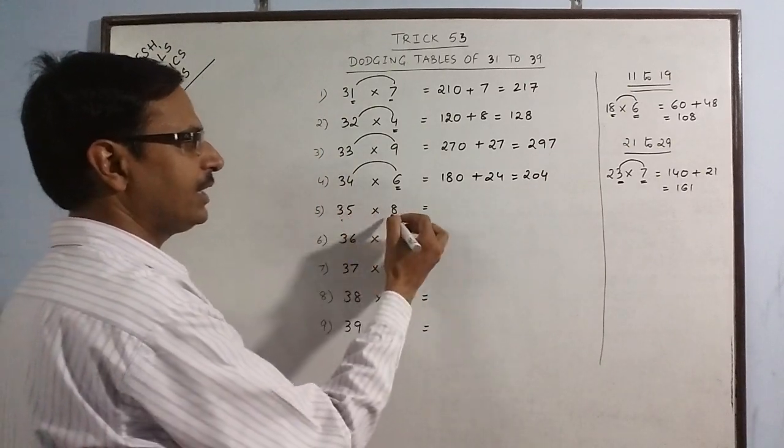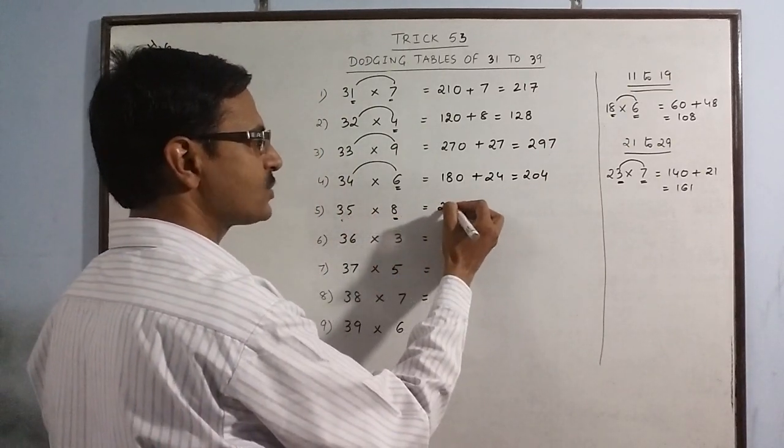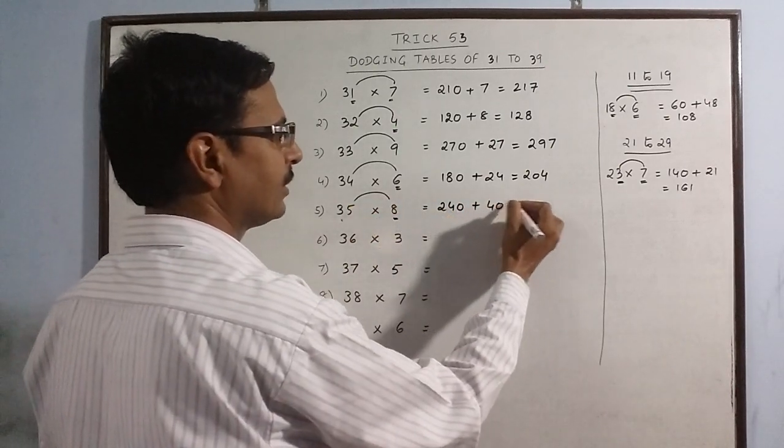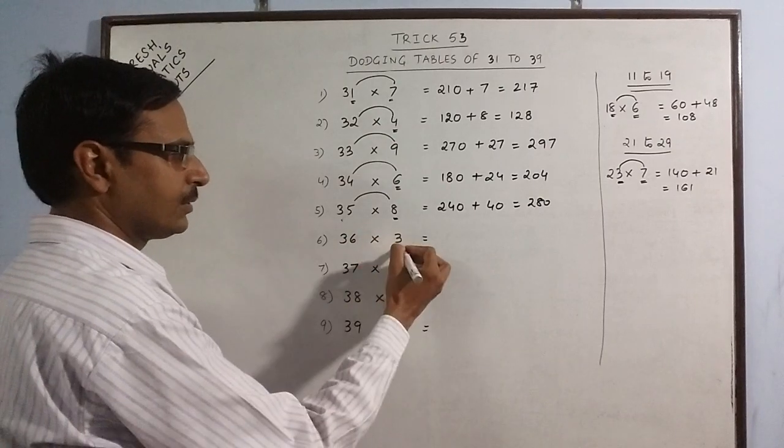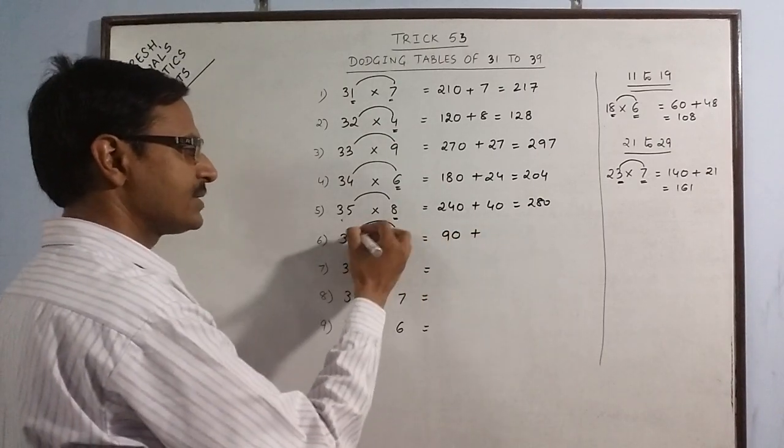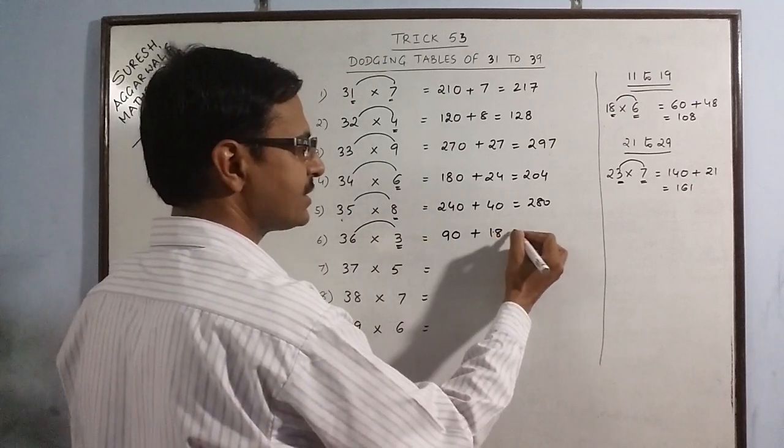35 into 8: triple of 8 is 24, put a 0, 8 fives are 40, the result is 280. 36 into 3: triple of 3 is 9, put a 0, 6 into 3 is 18, answer is 108.